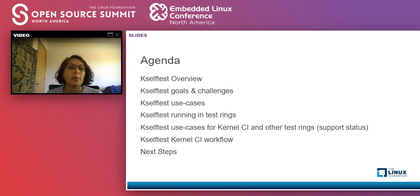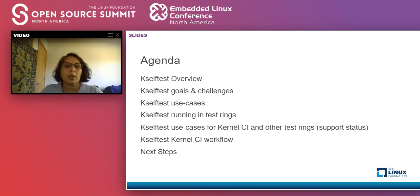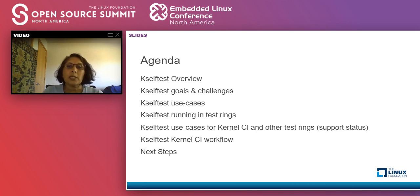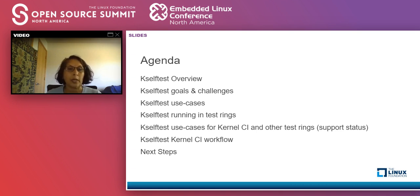I'll walk you through some use cases and demos — showing how individual tests can be run, how you can run all the tests, and so on. We'll also talk about what it takes to support fully running kselftests in test rings, and briefly cover Kernel CI use cases. The focus is getting kselftests running in Kernel CI so we can do regression tests on all of our trees during integration and development.